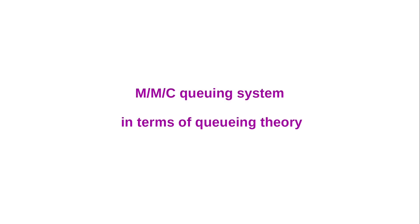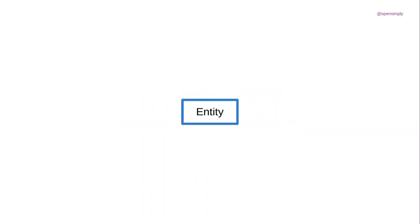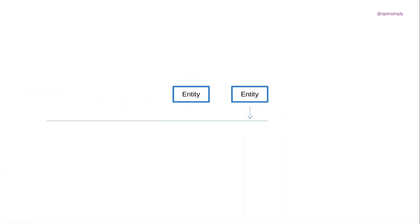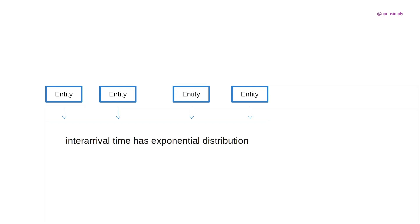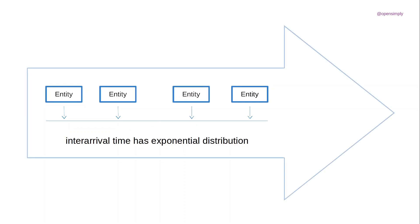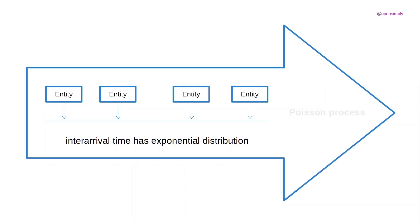The system will now be explained in terms of queuing theory. For a client or any other similar object, the term 'entity' is used. In an MMC queuing system, it is assumed that the flow of entities arriving at the system behaves as a stationary Poisson process. Entity arrival events are stochastically independent, and the time between arrivals is distributed exponentially. This is a homogeneous process with the property of memorylessness.